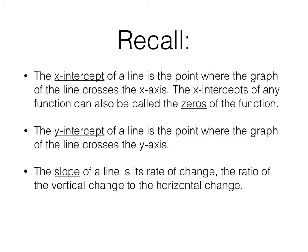To make it a little bit less boring, since these are review things we're looking at, we'll use the lightsaber. The x-intercept of a line is the point where the graph of the line crosses the x-axis. The x-intercepts of any function can also be called the zeros of the function.